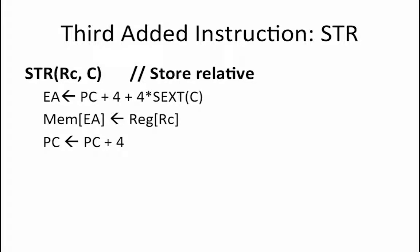The third instruction that we want to add to our beta is a STR instruction, which is a store-relative instruction. For this instruction, the effective address is computed by sign-extending the constant C, multiplying it by 4, and adding it to PC plus 4. The contents of register RC are then stored at the memory location pointed to by this effective address. As a final step, the PC is incremented by 4 to point to the next instruction.